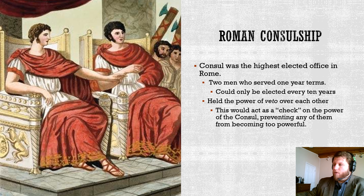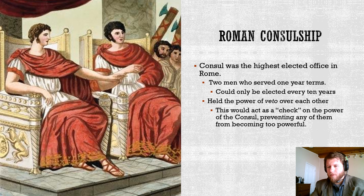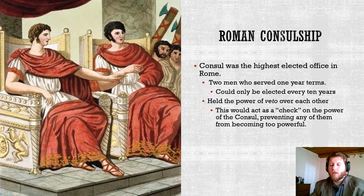Let's talk about the Roman branches of government. These are the Roman consuls. Unlike our government where we have one president, the consul is the highest elected office in Rome. These people are elected, not appointed. There are two of them at any given time, and they serve one-year terms. You are only consul for one year, however you could be consul five or six times in your life — it just has to be ten years in between.